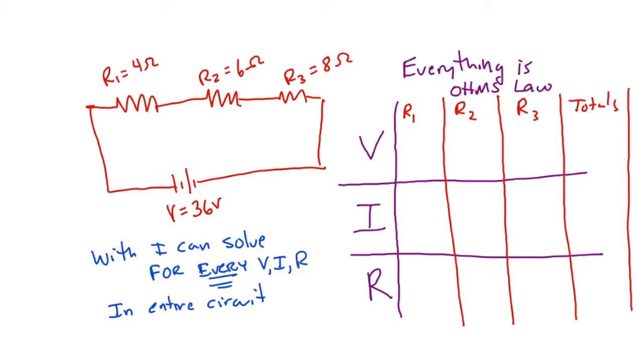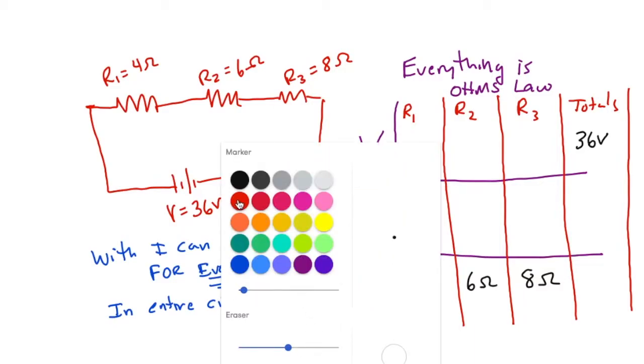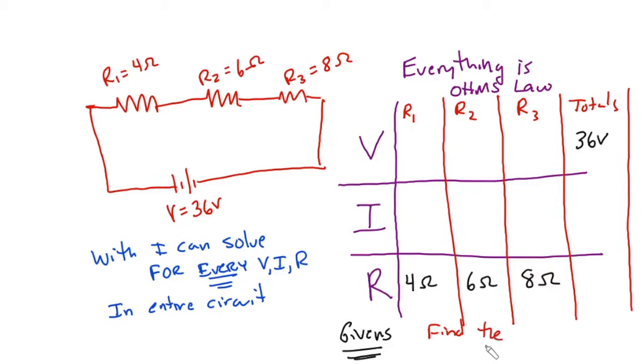Now we plug in our givens, so that we can see if there's any gaps, because we're going to use V equals IR across all of these. So now I'm going to put my givens in black. So at R1, we don't know the voltage, we don't know the I, but we do know that the R there is going to be four ohms. At R2, the only thing we know is six ohms, and at R3, we know eight ohms. And the other thing we know is V total is 36 volts. And we see there's not a lot here, but what we want to do is find the row with one unknown.